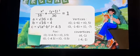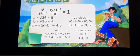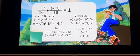So the vertices should be at 0, negative 1 plus 6, and 0, negative 1 minus 6.